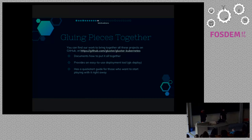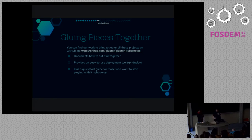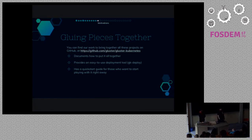You can find our work that we put in to glue all this together on the Gluster Kubernetes project on GitHub — the URL is up there. It documents how we put all this together, provides an easy-to-use deployment tool, and has a quick start guide for those who want to start playing with it right away in VMs or on bare metal, whatever you choose.